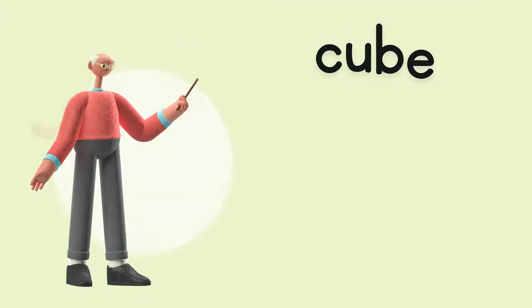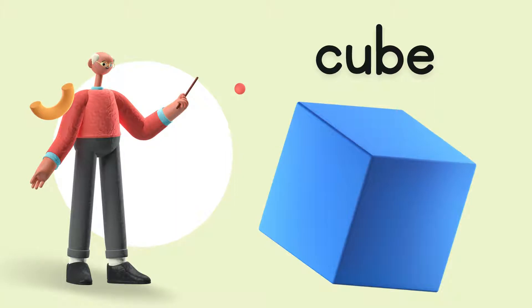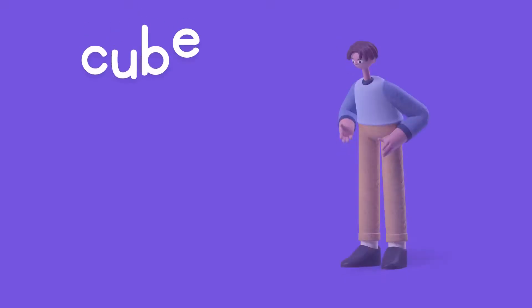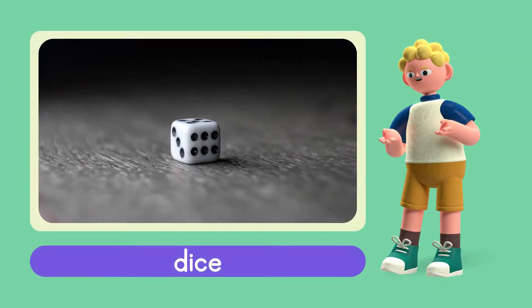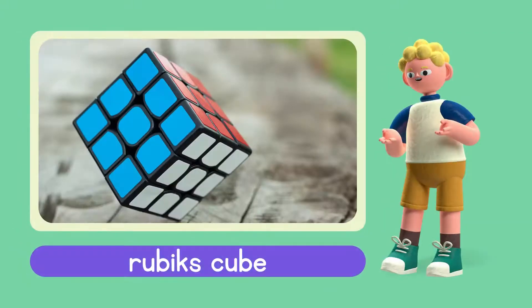Next — say with me: Cube. C-U-B-E. Cube. Good job. This is an example of an object with the shape of a cube. Dice has the shape of a cube. This object named Rubik's Cube also has the shape of a cube.